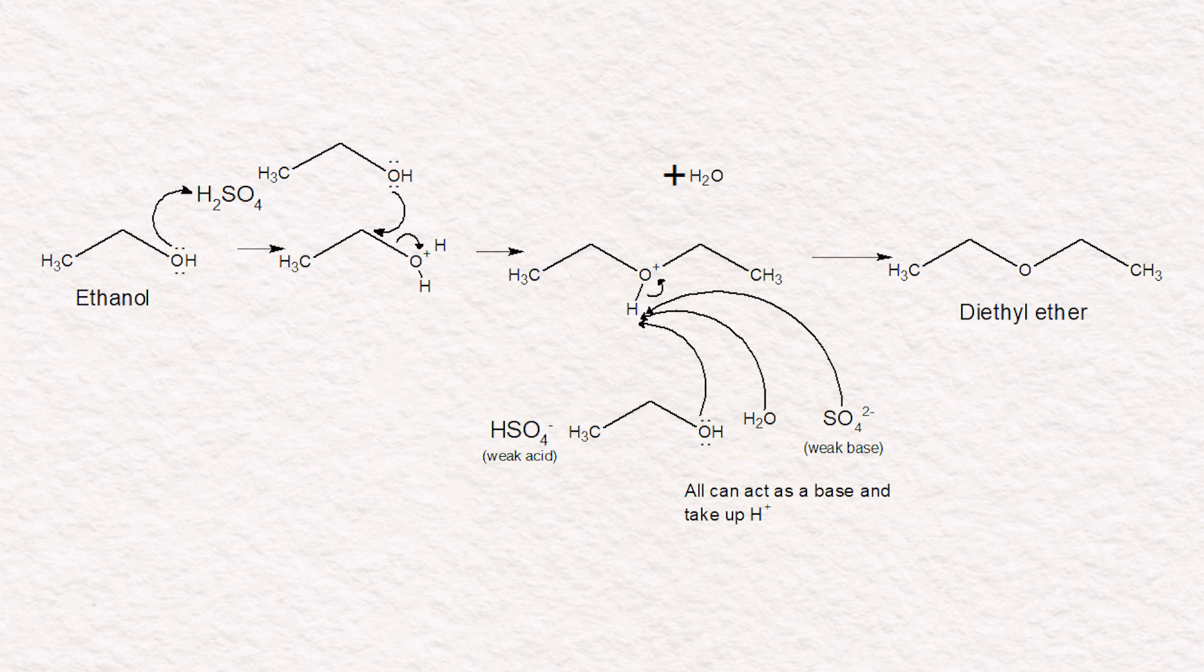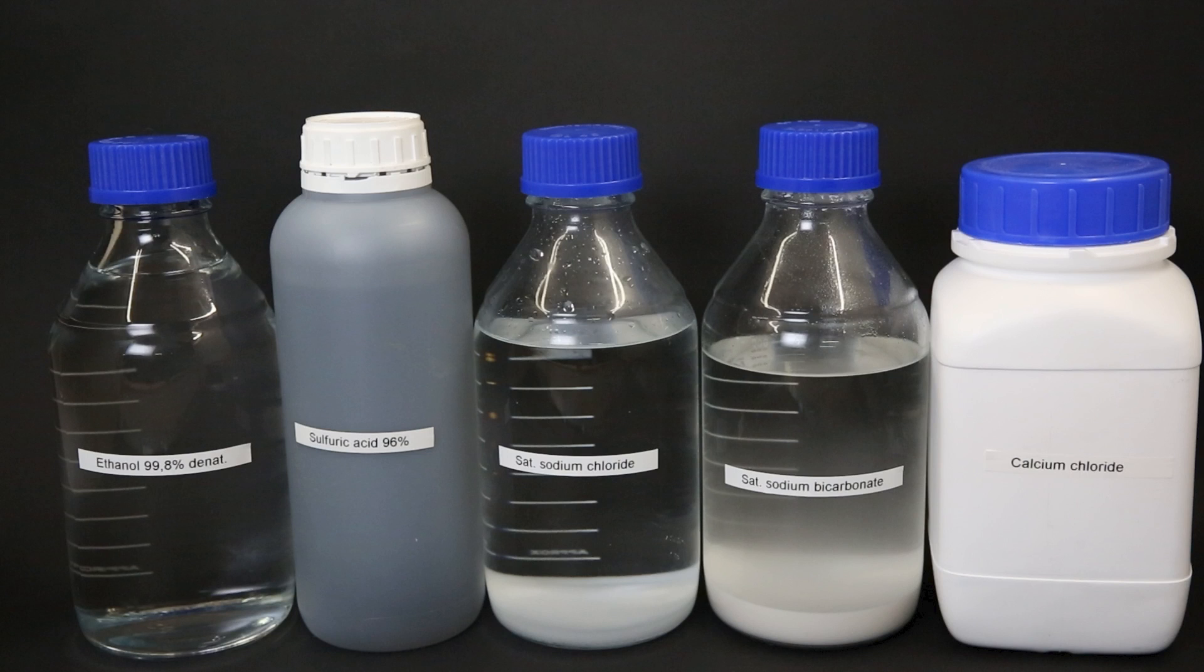After this, the electron pair of the bond moves onto the ether and the reaction is finished. So for the reaction, I only need ethanol and concentrated sulfuric acid. And for the purification, a saturated sodium chloride solution, a saturated sodium bicarbonate solution, and calcium chloride.